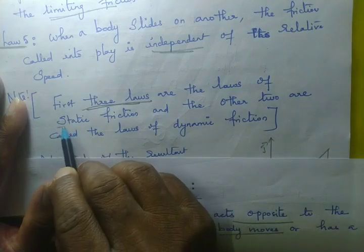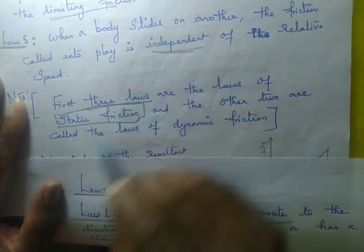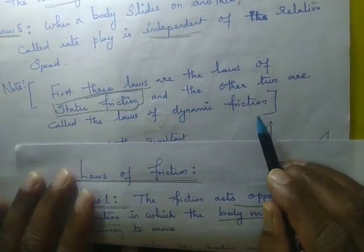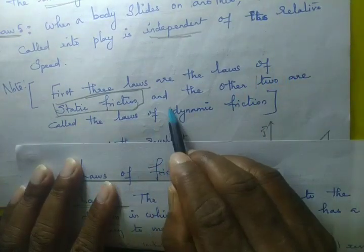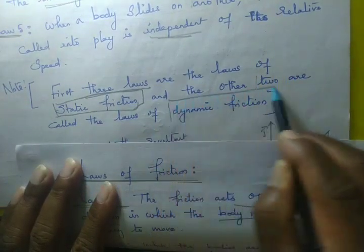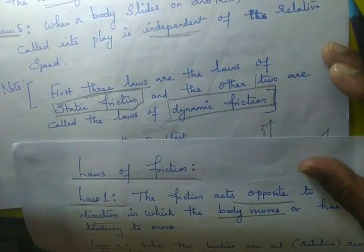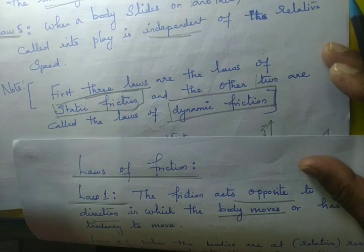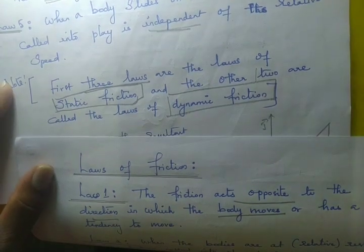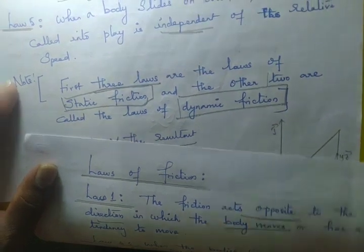The first three laws are called static friction laws, and the remaining two laws — laws 4 and 5 — are called dynamic friction laws.